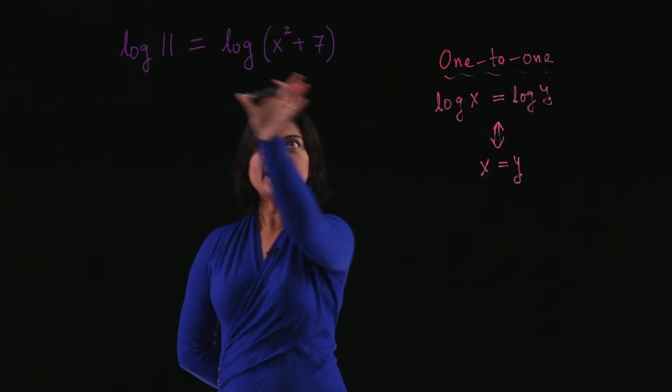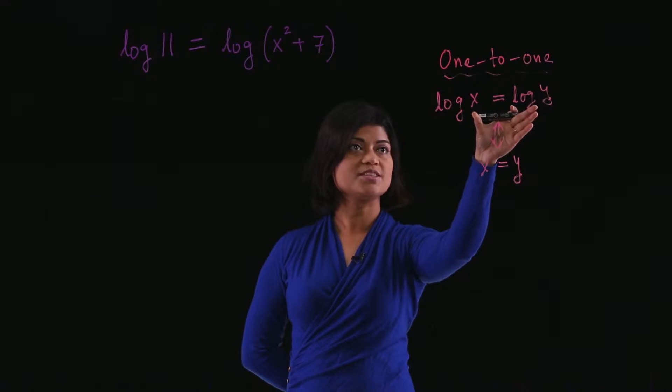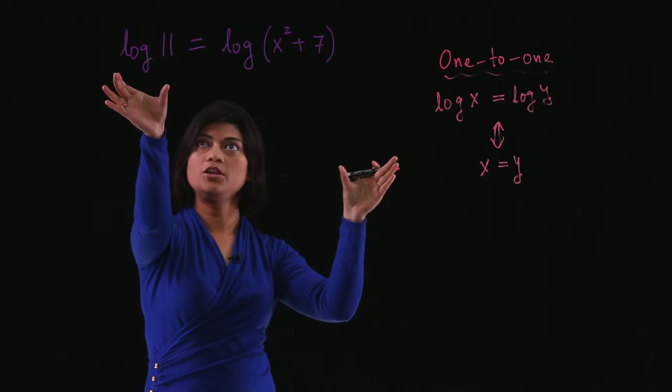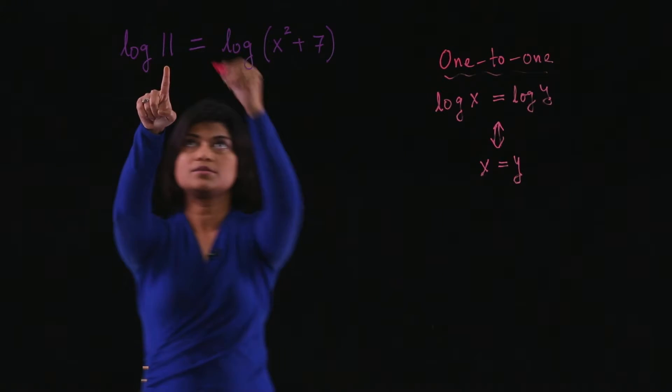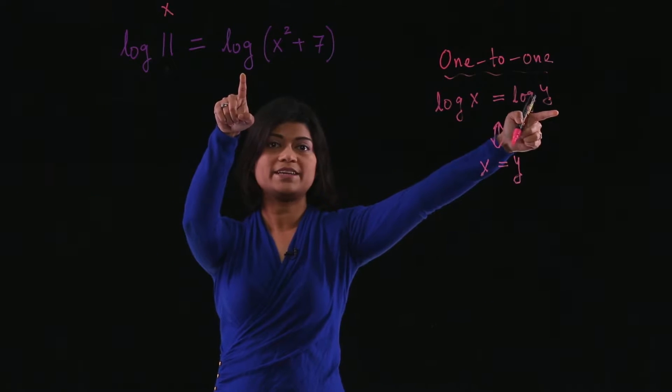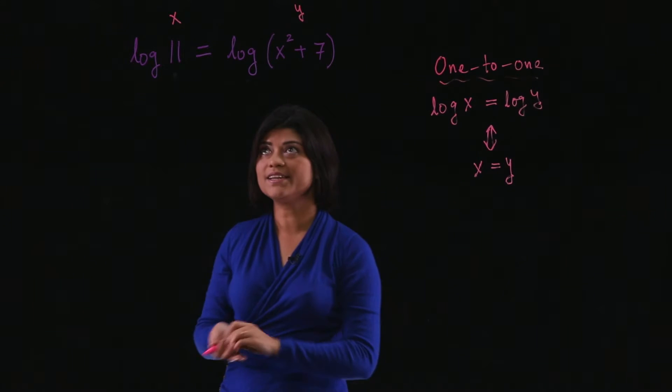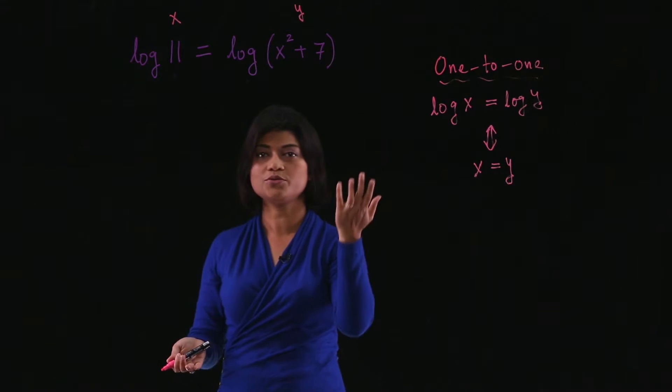Look at the equation that's given to us and compare with this property. We have log of something—this is x—equals logarithm of something else. Call that y. Then the one-to-one property says we should have x equals y.